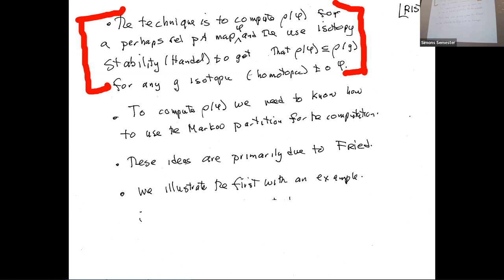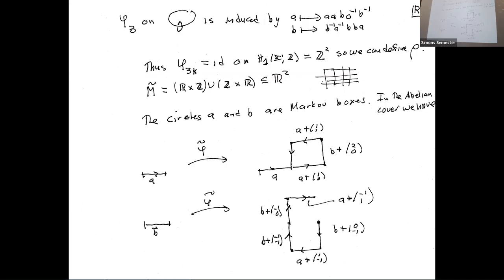We can define the rotation set of a braid type as the rotation set of its pseudo-Anosov representative. This is well-defined because within a braid type, the complement is conjugate up to isotopy, so the Thurston representative and its rotation set are the same. For period-five orbit on the annulus with rotation number 2/5: here's a Markov partition, we lift it to the cover, draw the labeled transition diagram, compute the minimal loops, and find the rotation interval is [1/3, 1/2].